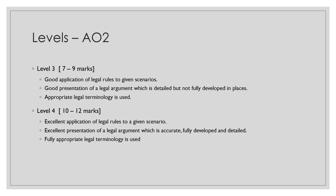AO2 is also broken down into 4 levels. Level 3 is worth 7 to 9 marks — to achieve this you need a good application of legal rules to the given scenario, with legal arguments that are detailed but not fully developed in places, and appropriate legal terminology. To reach Level 4 and get 12 marks, you need excellent application of legal rules to the scenario, with legal arguments that are fully accurate, developed and detailed, and fully appropriate legal terminology. This is the criteria upon which your answer will be assessed.